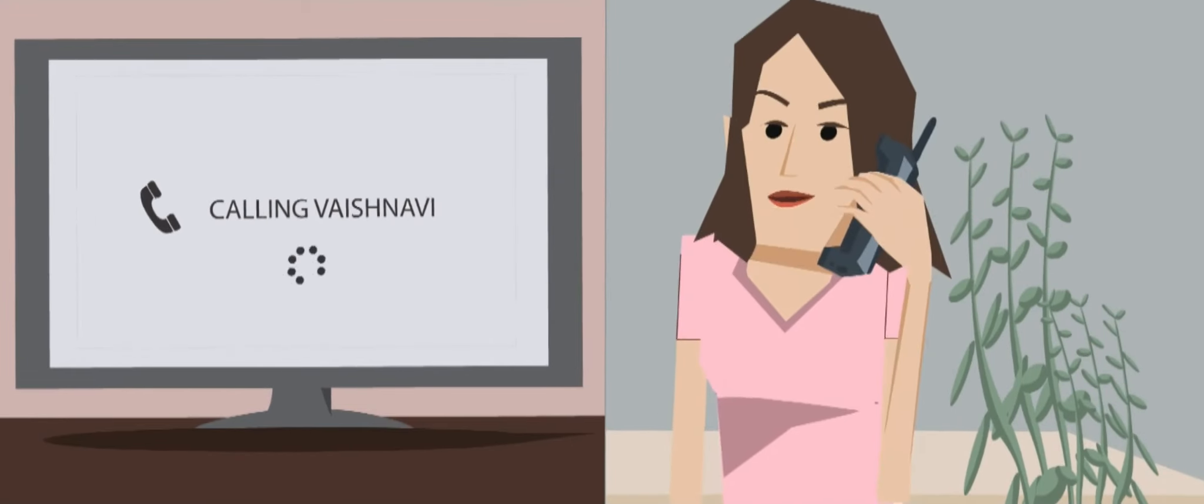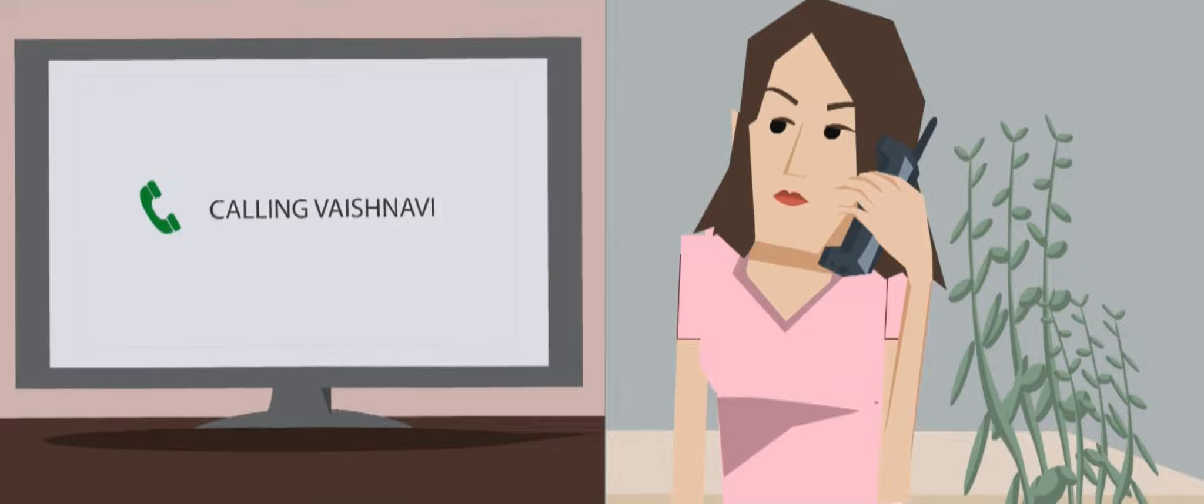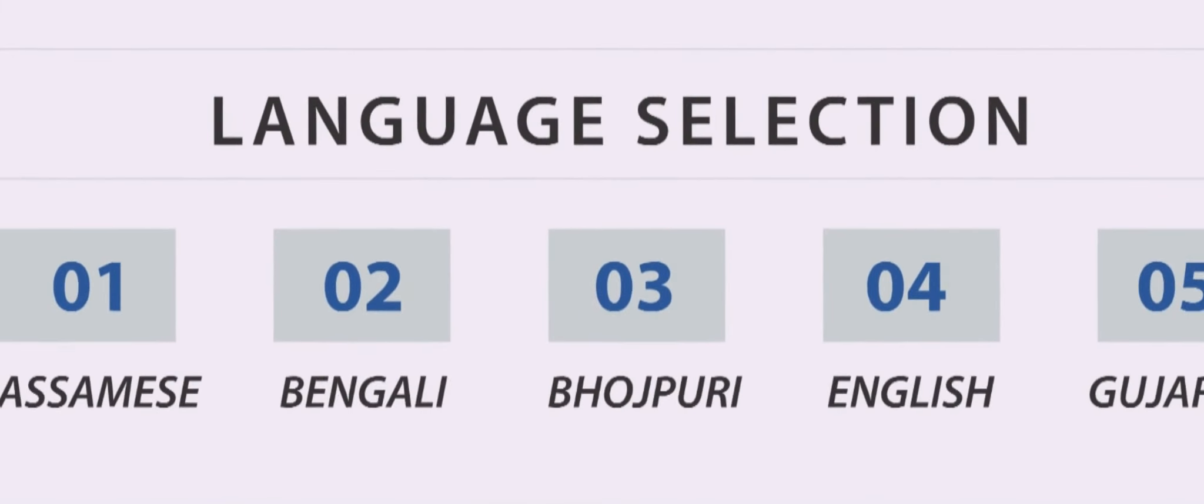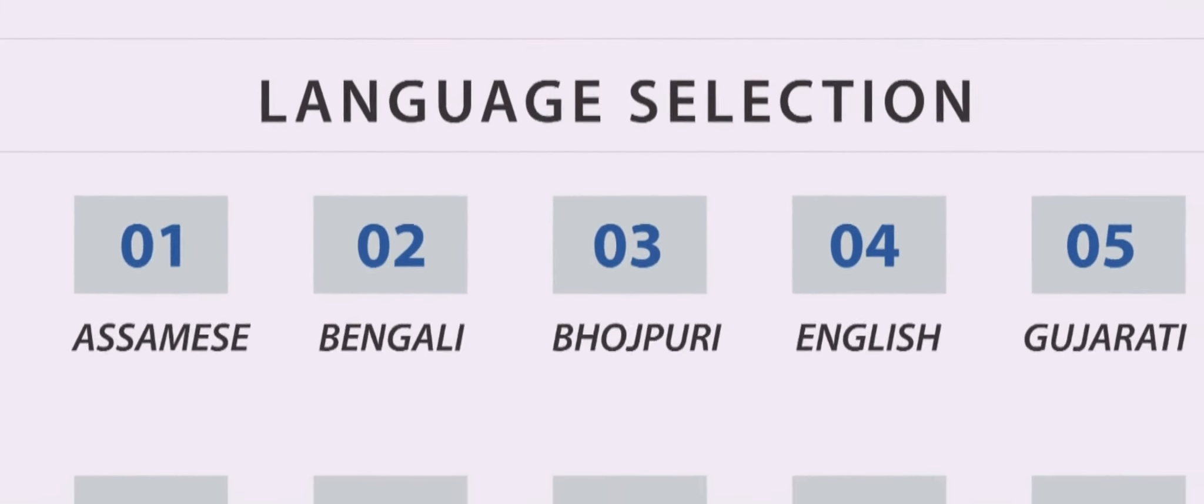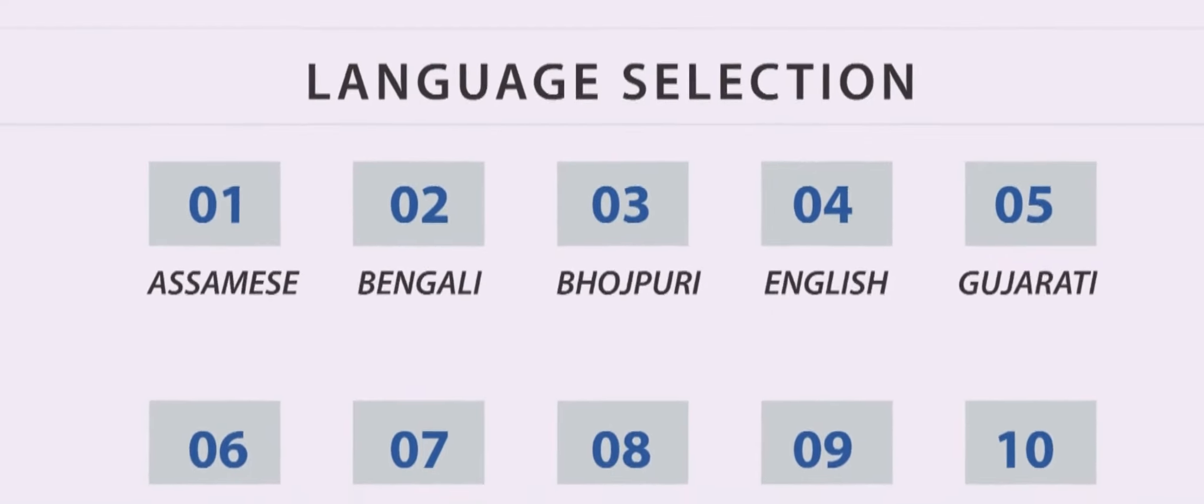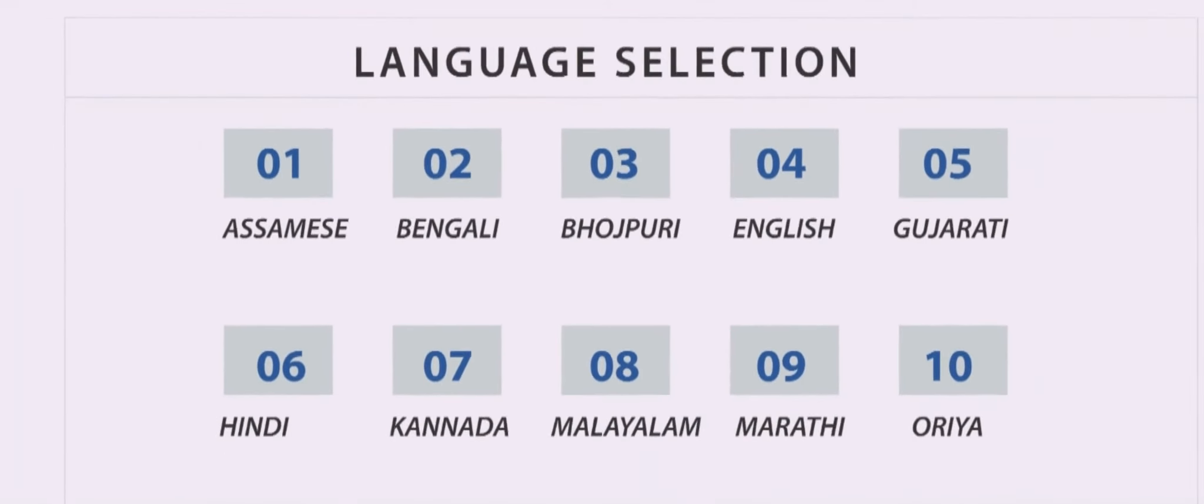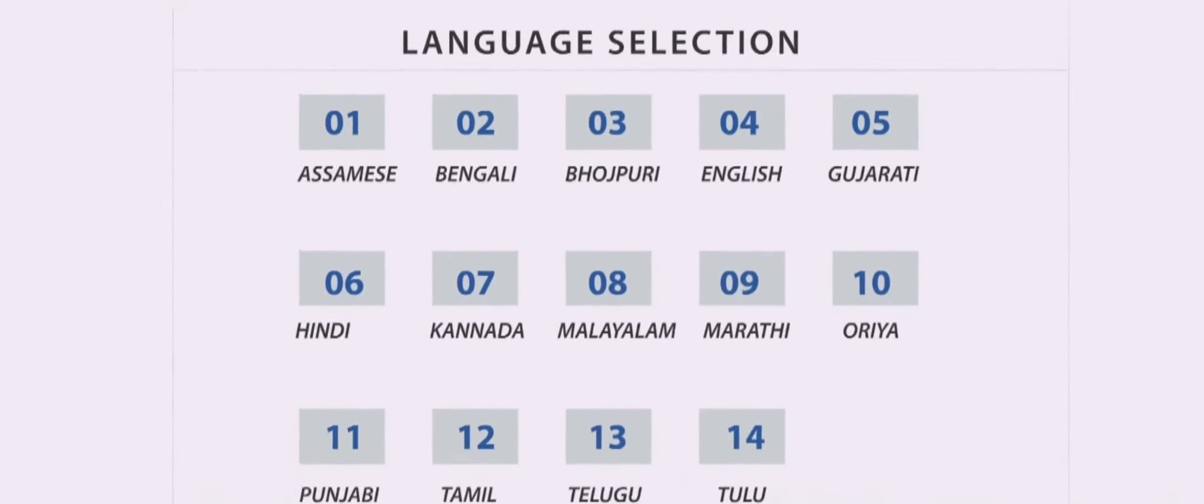Immediately, Voice Ensure sends an automated callback to the customer to verify the details received and capture further information, interacting just as a human agent would in his own vernacular language. This is possible due to Voice Ensure's multilingual speech recognition capabilities, which allows it to understand and communicate in 14 different Indian languages.